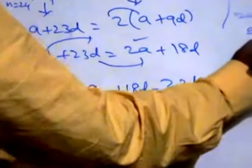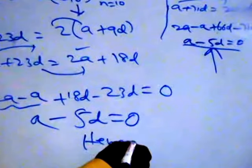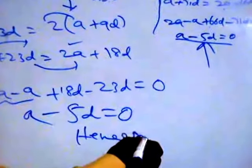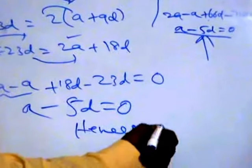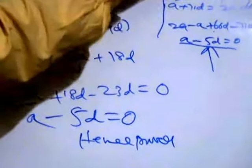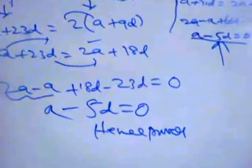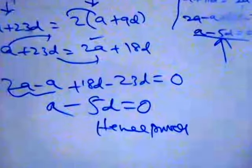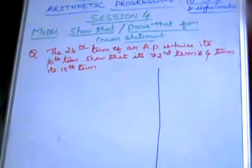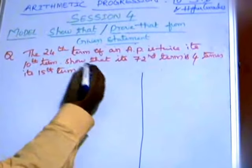These kinds of sums say: from a given statement you have to show or prove a particular thing. Hope you understood. Again, one more sum — from a given statement you must prove or show that something holds.